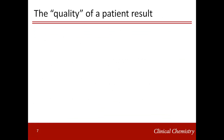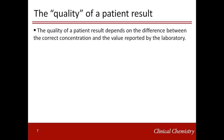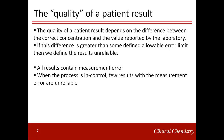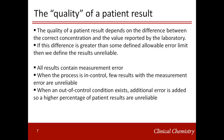Why do we care about these out-of-control conditions? Because we care about the quality of patient results produced. The quality of a patient result depends on the difference between the correct concentration and the value reported by the laboratory. If this difference is greater than a specified allowable error limit, then we define the patient result as unreliable. All patient results contain some measurement error. When the process is in control, only a few results with measurement error are unreliable. When an out-of-control condition exists, additional error is added, so a higher percentage of patient results become unreliable.